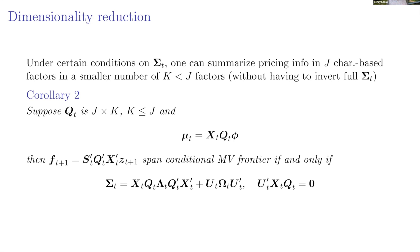The last theoretical question explores dimensionality reduction. When we have a zoo of factors and want a statistical model with a smaller number, we use a matrix Q that translates J characteristics — say, 100 — into maybe 10 factors. We put this Q into the mean assumption and the covariance assumption, and show in the paper that you can identify Q by implementing a simple PCA on specific portfolios.